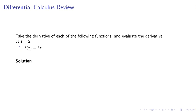The differential calculus review. Take the derivative of each of the following functions and evaluate the derivative at t equals 2. Example 1, f of t equals 3t. The solution is f prime of t equals 3 and f prime of 0 equals 3.